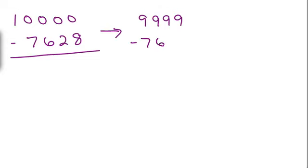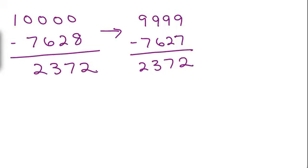So this would give you 9999 minus, and what really happens here, you might notice, when you subtract 1, it just changes the units digit here from an 8 to a 7, right, if you subtract 1. And now the arithmetic's pretty simple. You have 2372 and you're done. So that is the answer to this problem, 2372.